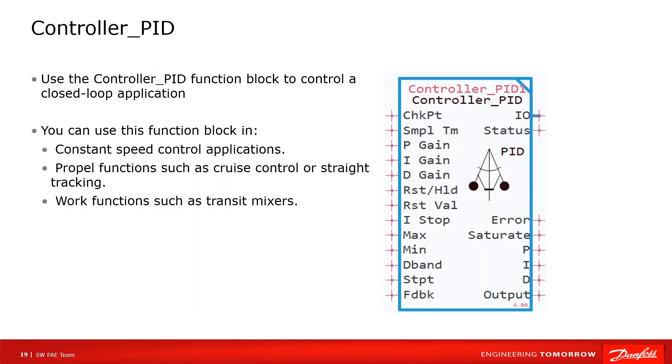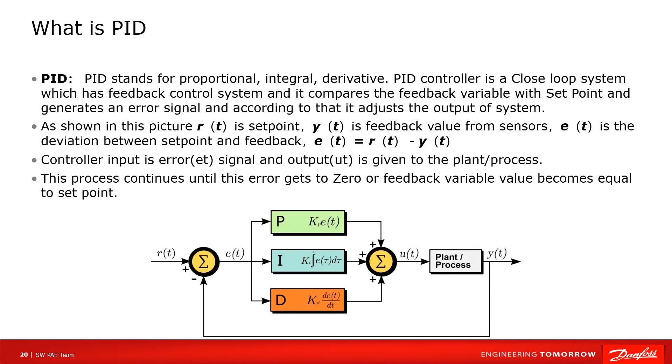Let's have a look at Controller PID function block. With this function block, movement process can be well controlled. This function block is used in projects with functions of constant speed control, closed loop control, or straight tracking.